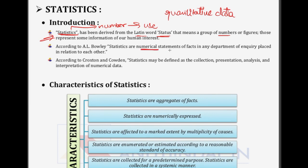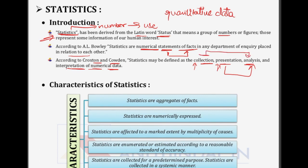Statistics are numerical statements of any fact. Any numerical statement that gives you information about a fact in any department of inquiry placed in relation to each other. Coming to the definition by Croxton and Cowden: statistics may be defined as the collection, presentation, analysis and interpretation of numerical data. So you collect the data — for example your household income and expenses — then present it in a particular form, analyze it, and extract useful information from that raw data. That is statistics.